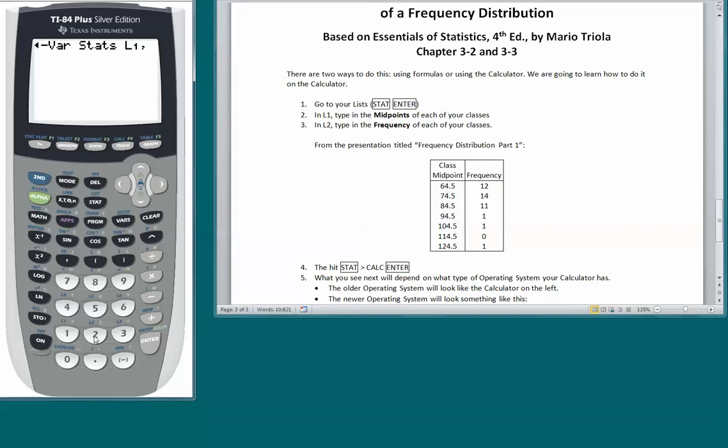Then we hit the comma key, and then we have to tell it to look at list 2. So that's 2nd, 2, and there you see that on our calculator display, and that's good, and we're going to hit ENTER.